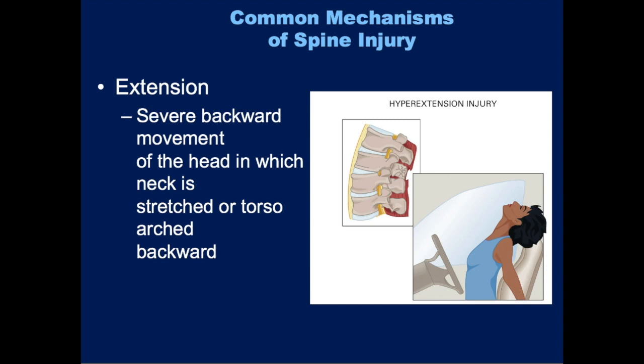An extension injury happens anytime you hyperextend the neck — when the neck is bent severely backwards and stretched out. This can also happen if the torso itself is severely arched backwards.